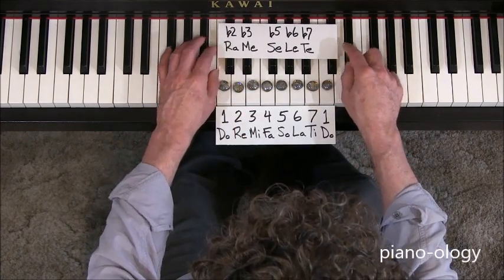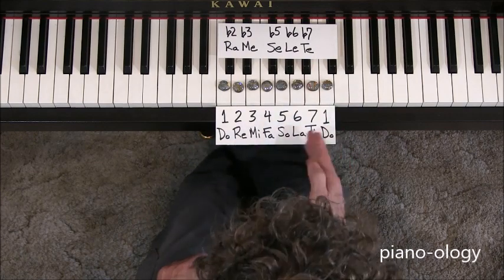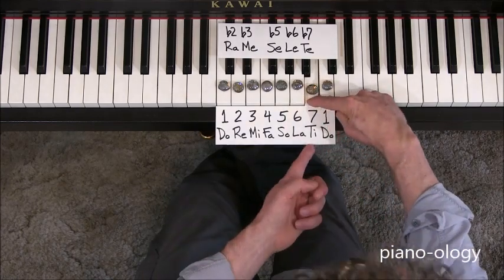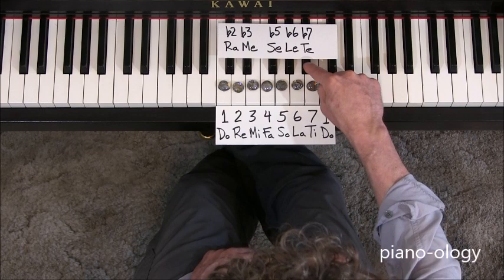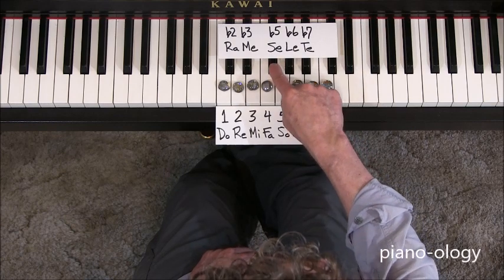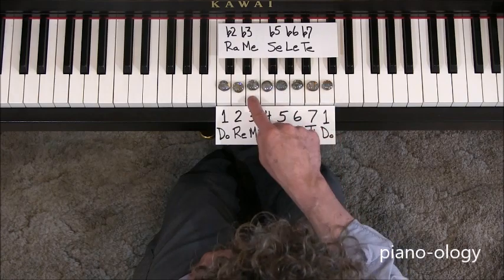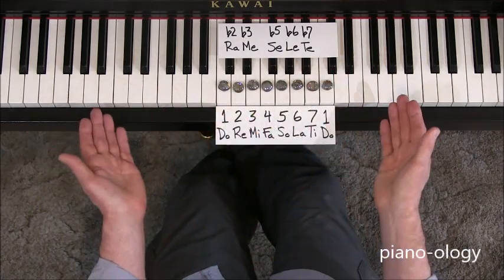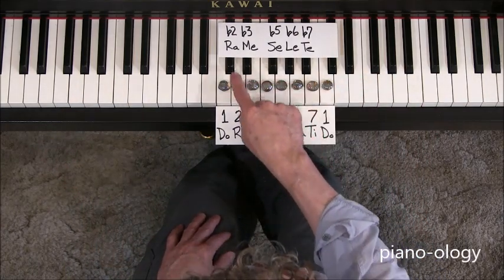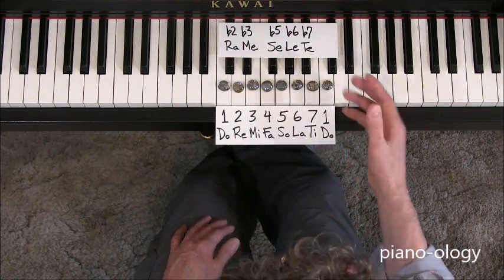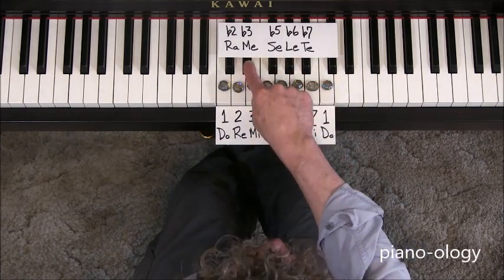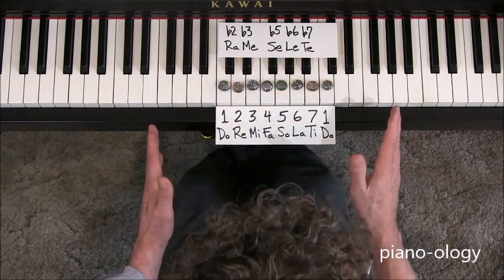And now let's do solfege. Again, the solfege names are based on the accidentals of the note we use as the point of reference. We're going to go DO flat, which just happens to be TI. TI flat is TE. LA flat is LE. SO flat is SE. FA flat just happens to be MI. Again, just run with it, don't question it, it's just the way the music works out. MI flat is ME. RE flat is RA. And again, notice: T, TE, LA, LE, S, SE, M, ME, R, RA.